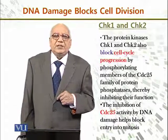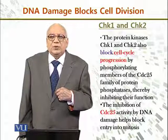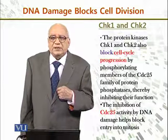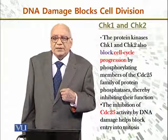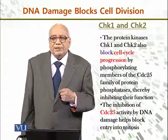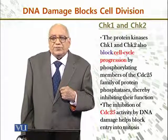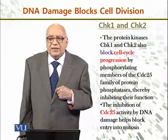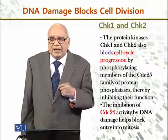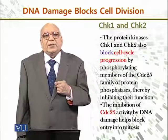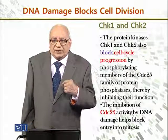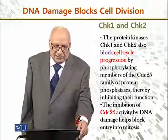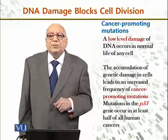Another important player involves CHK1 and CHK2, which are protein kinases. They also block cell cycle progression by phosphorylating members of the CDC25 family of protein phosphatases, thereby inhibiting their function. The inhibition of CDC25 activity by DNA damage helps block entry into mitosis, meaning the cell cycle stops because it is at mitosis where the cell divides into two parts.